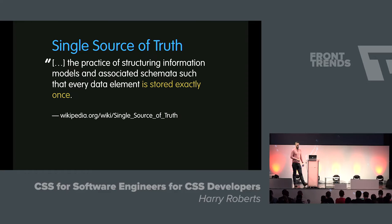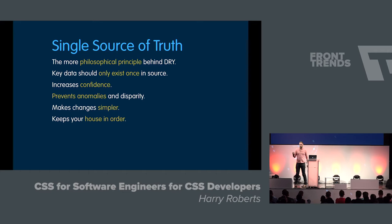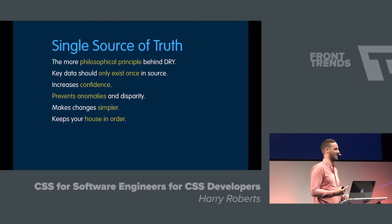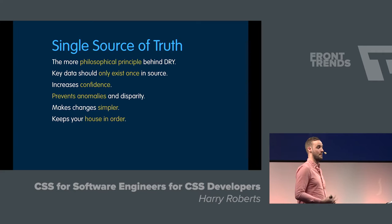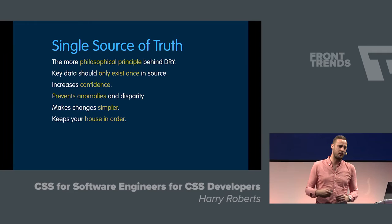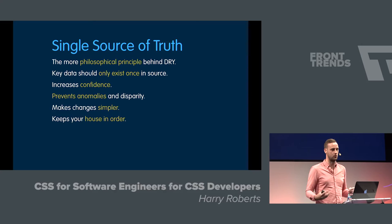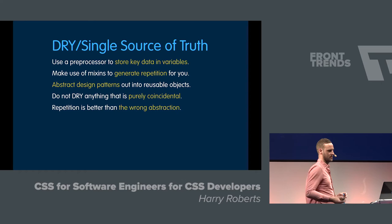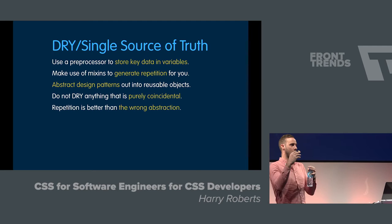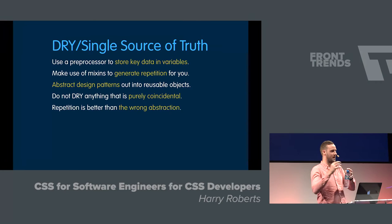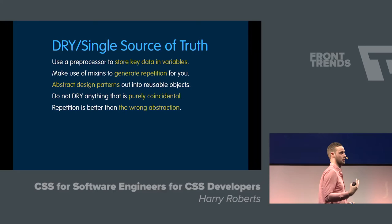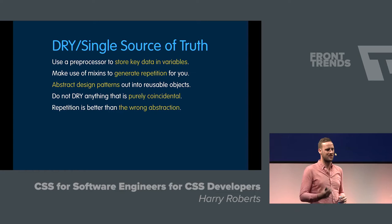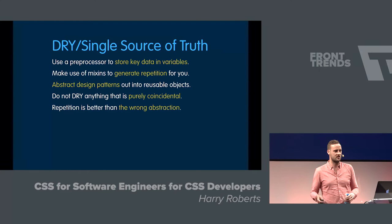The single source of truth is the practice of structuring information so that it's stored exactly once. We do the DRY — we don't repeat ourselves — and that will end up giving us this single source of truth. This gives us a lot more confidence. If we know we've got a key bit of information stored only once, we know that we need to change it in one place and the entire program will act accordingly. Use a preprocessor to store key data in variables or in mixins. Don't DRY anything that is purely coincidental. Misuse of extends is a really good example of failing to understand the DRY principle. There's a really nice saying: repetition is better than the wrong abstraction.